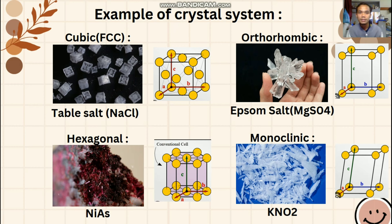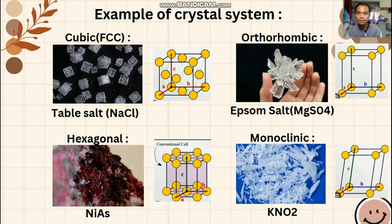The next slide shows examples of crystal systems. We have many types — for example, cubic, orthorhombic, monoclinic, hexagonal, trigonal, and so on. The first picture is the normal table salt, which is sodium chloride. The second is Epsom salt, also known as magnesium sulfate, having an orthorhombic crystal structure. The next is nickel arsenide with a hexagonal crystal structure. Last but not least is potassium nitrate. The main concern in this video is to demonstrate the crystallization process of Epsom salt as well as table salt, and the following scene shows the step-by-step procedures.